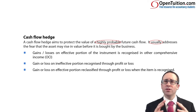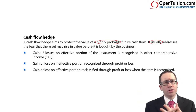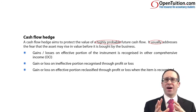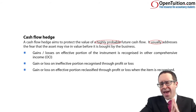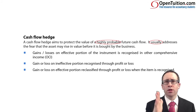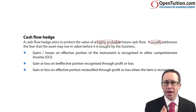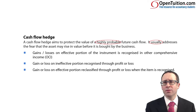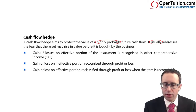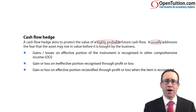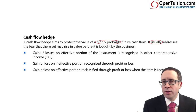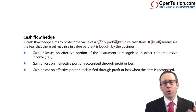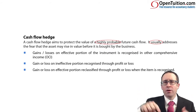Once you've identified you have a cash flow hedge, the rules go against any normal accounting rules — they are specific hedge accounting rules. The rules are as follows: any gains or losses on the hedging instrument — the derivative — are recognised in other comprehensive income, hidden away in OCI. Then, at some point in the future when the item is bought, any gain or loss stored in OCI is recycled through profit or loss.